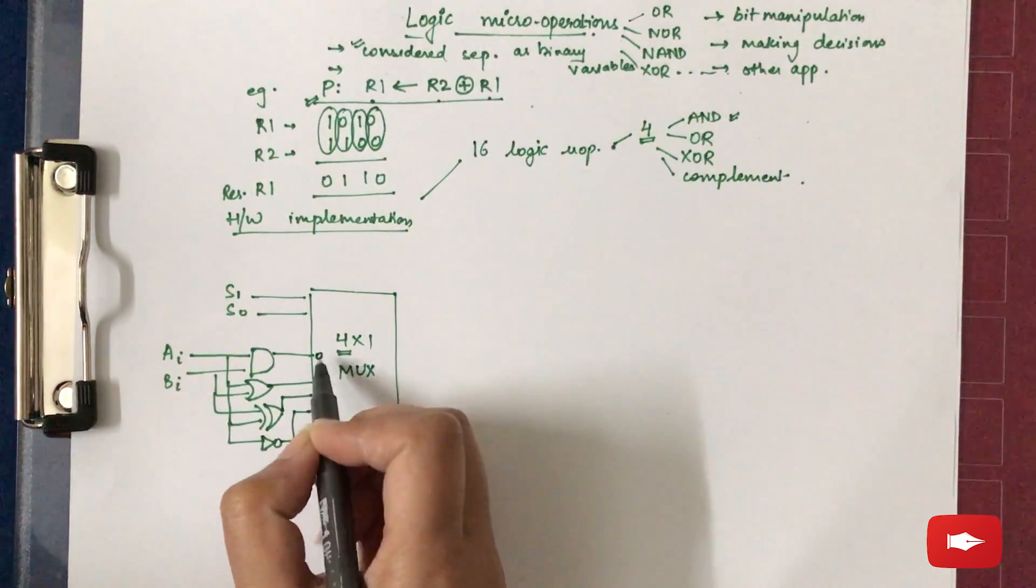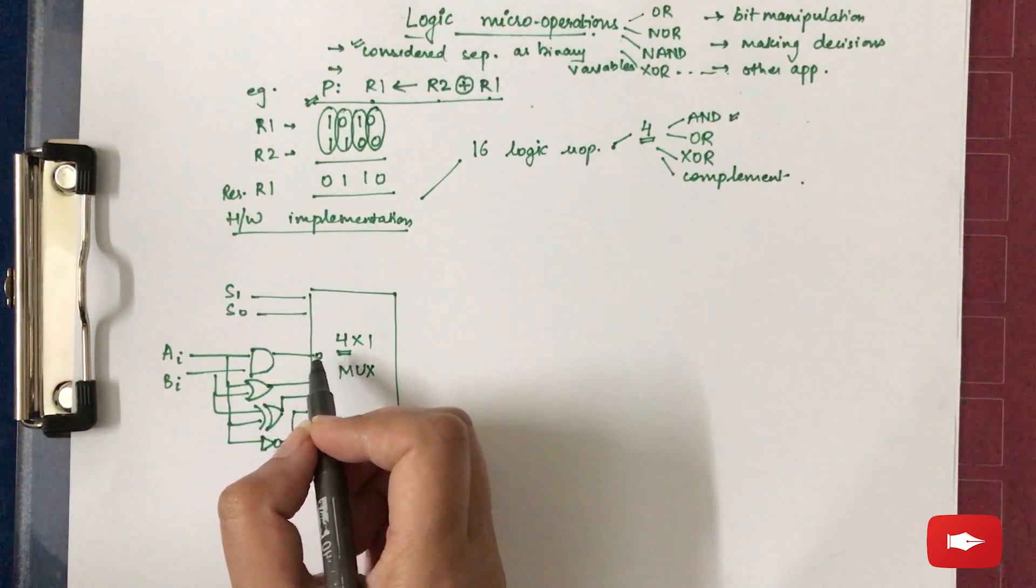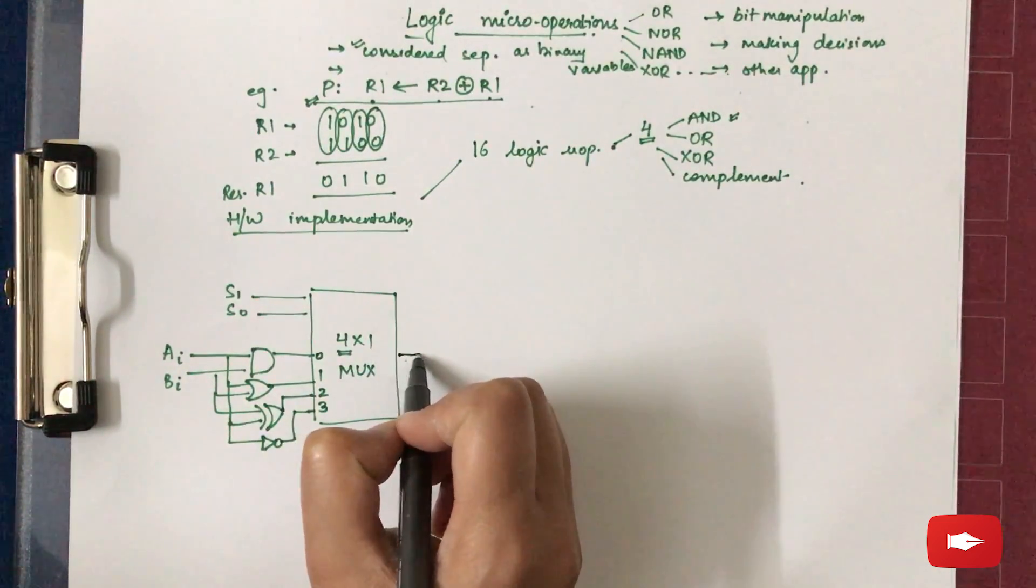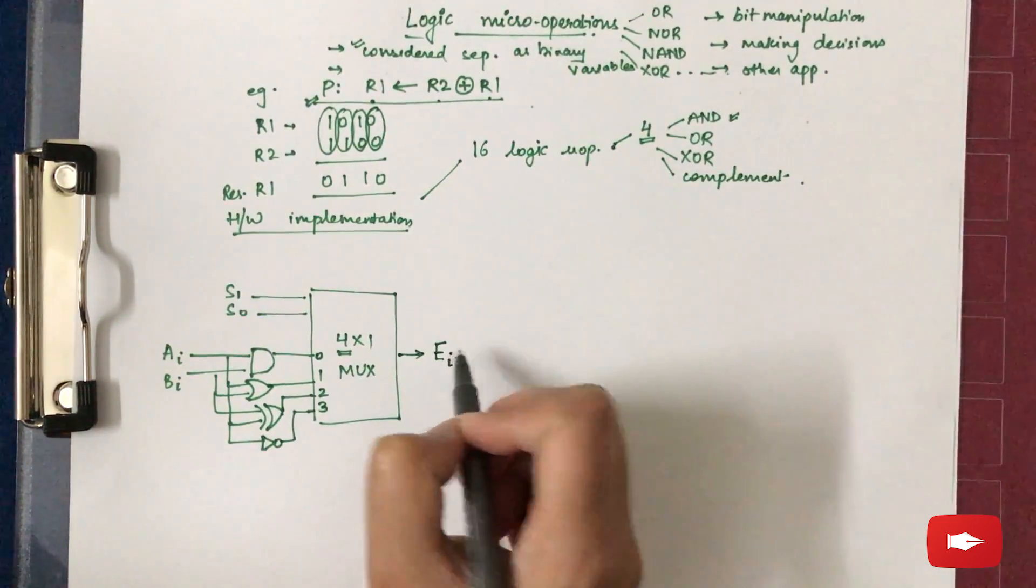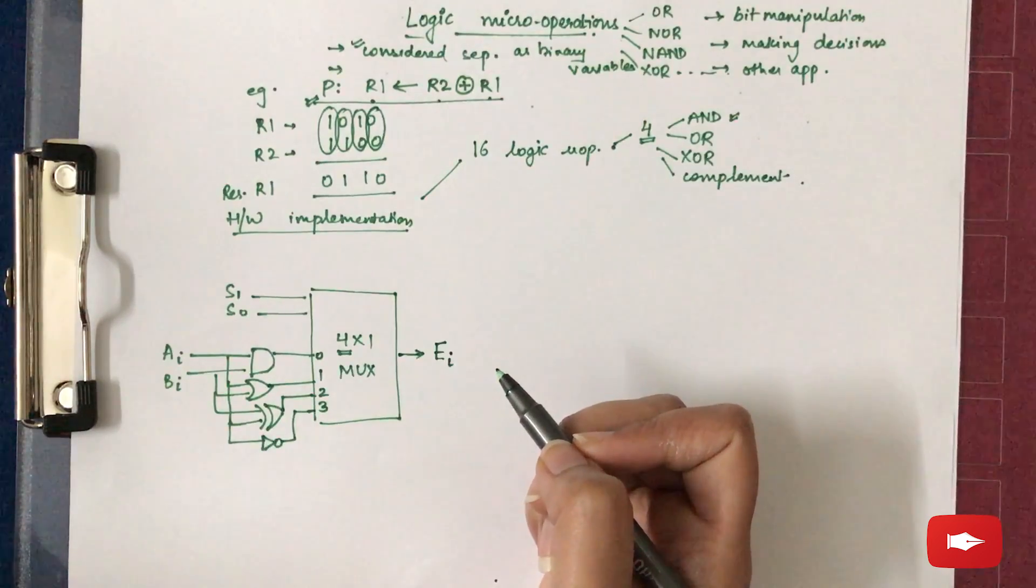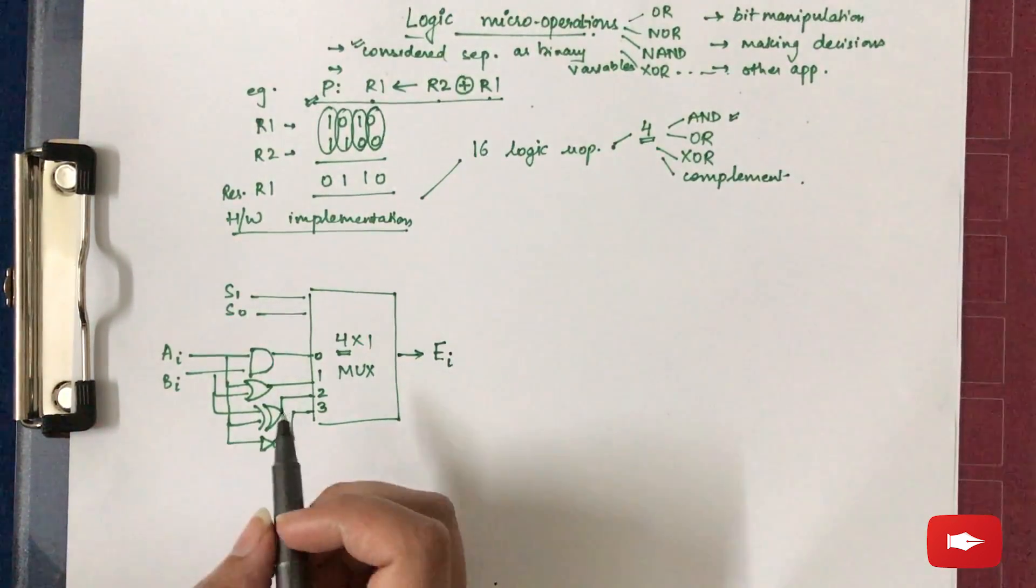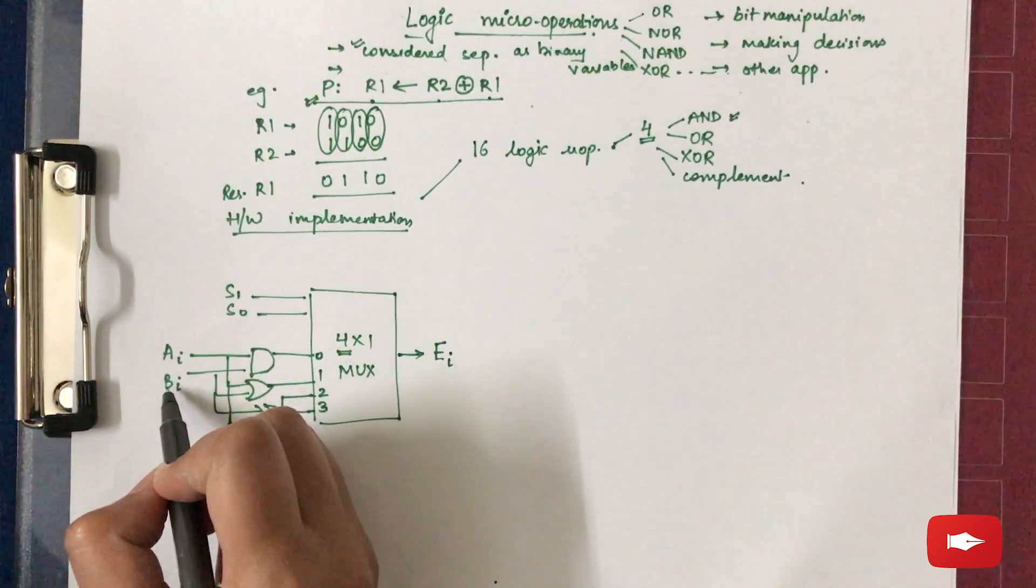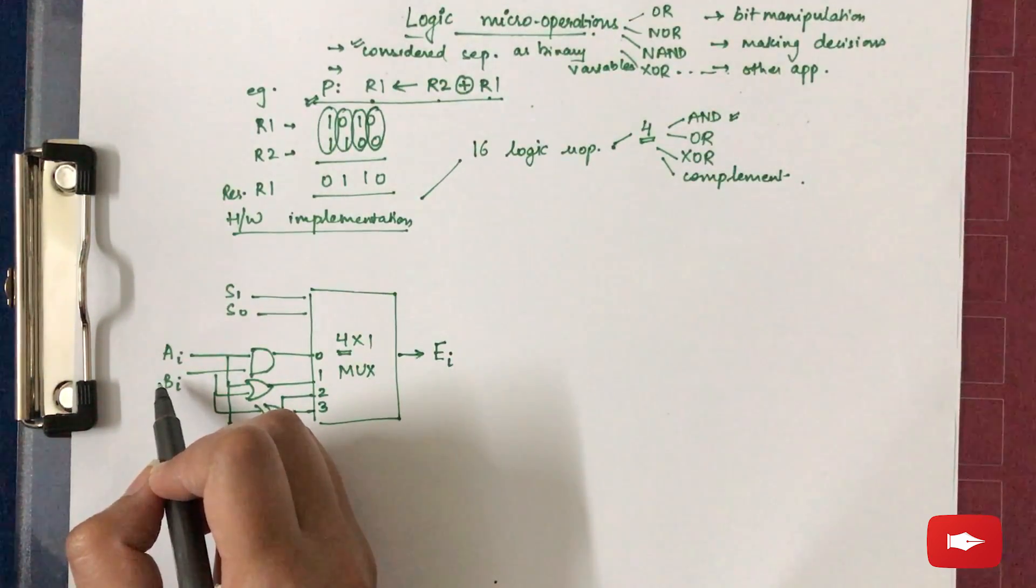0, 1, 2, 3 - these are the 4 inputs. Out of these 4, select lines will select any one of them and that one will be enabled. Now firstly, what is this I representing in both A and B? Basically, if we consider A and B to be N-bit registers...